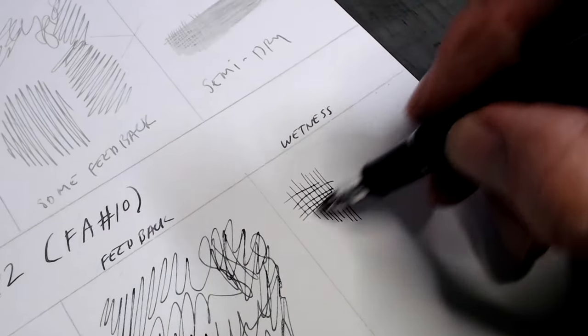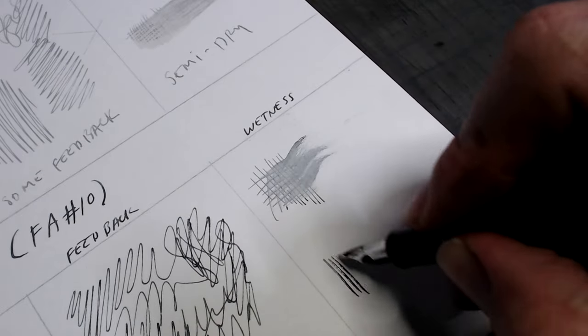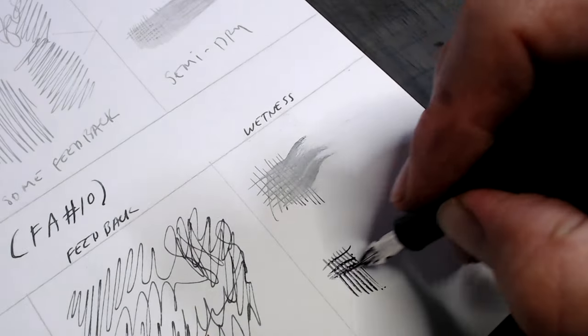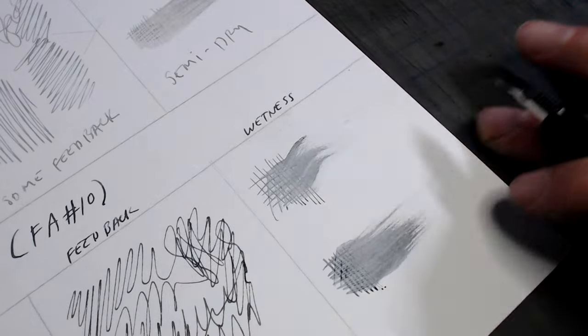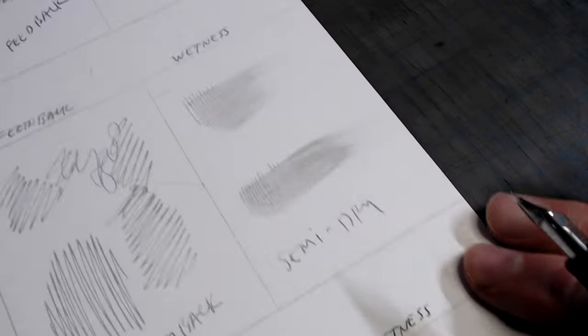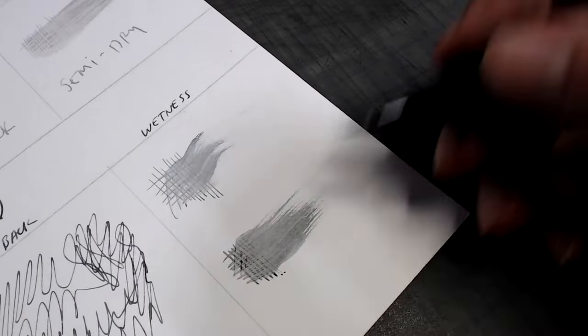And in the wetness test, as is the case with many full flex pens, the pen is on the wet side, though nothing crazy. It does mean you have to use good paper, and be careful not to smear your lines as you draw, since they take their time to dry.